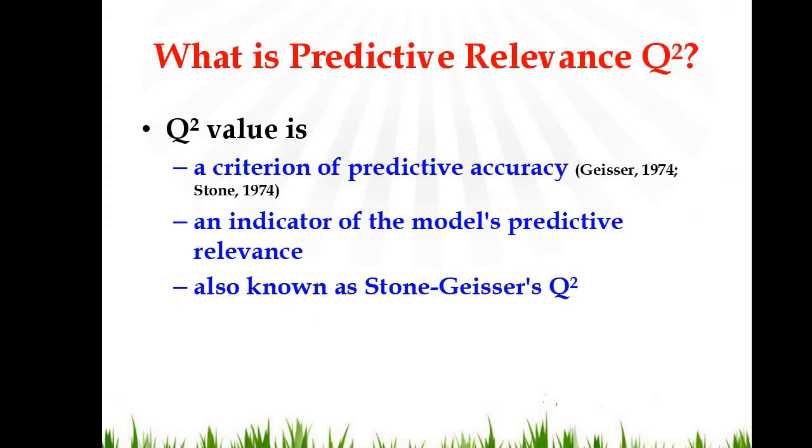Q-square is also known as a criterion of predictive accuracy of the model or an indicator of the model's predictive relevance. And it is also known as Stone-Geisser Q-square. The reason is that it was developed by Stone and Geisser.